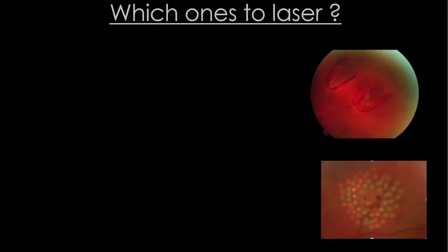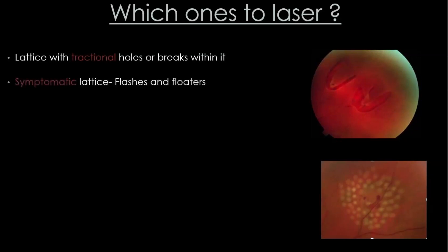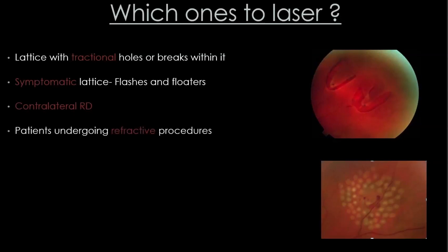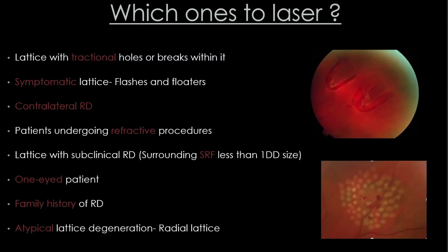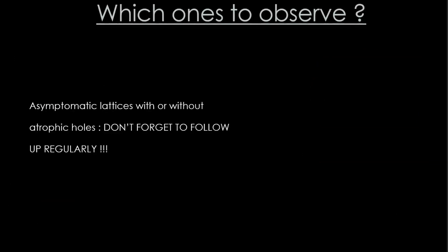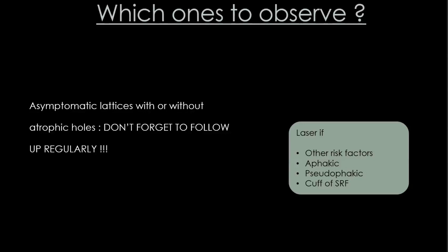Not all lattices need to be lasered. Laser those with tractional holes or breaks, symptomatic lattices, patients with a history of retinal detachment in the fellow eye, patients about to undergo refractive or cataract surgery, lattices with subretinal fluid, one-eye patients, family history of retinal detachment, and atypical lattices like radial lattices seen in Stickler syndrome. Asymptomatic lattices — even those with atrophic holes — can be observed with regular follow-up, unless there are risk factors, the patient is aphakic or pseudophakic, or there is a cuff of subretinal fluid.